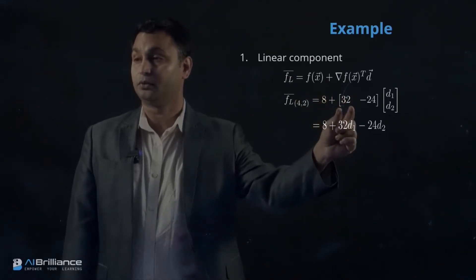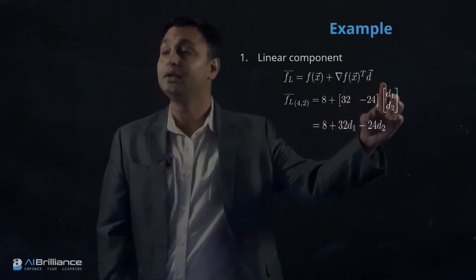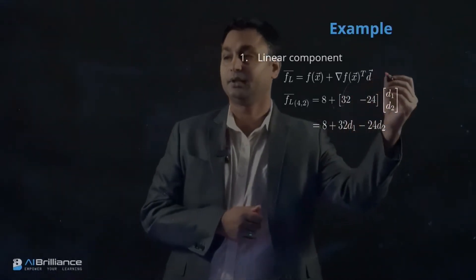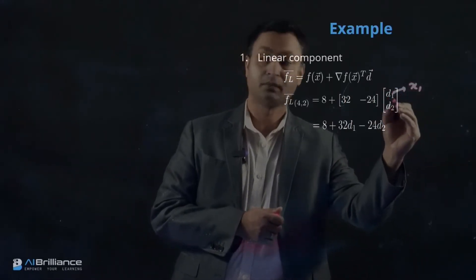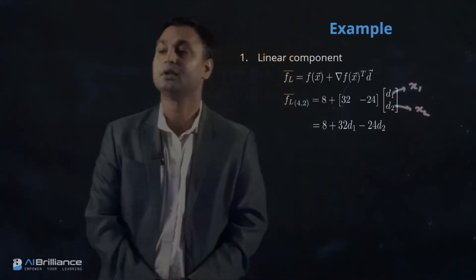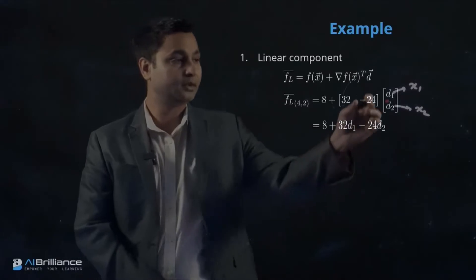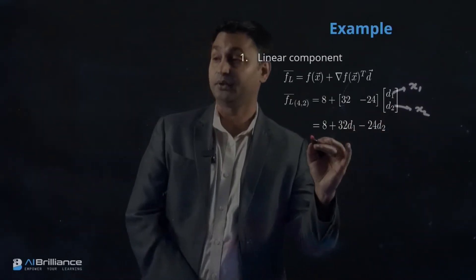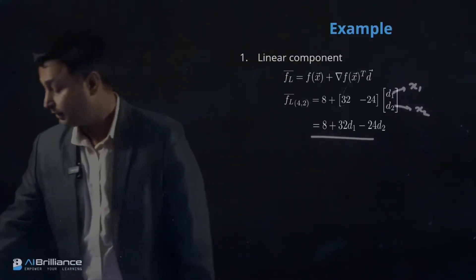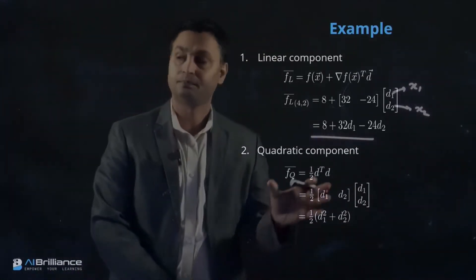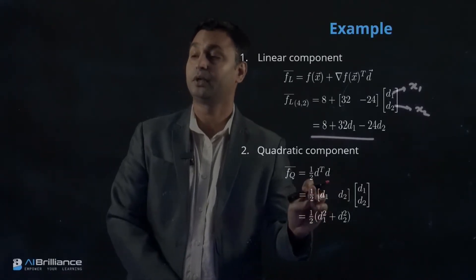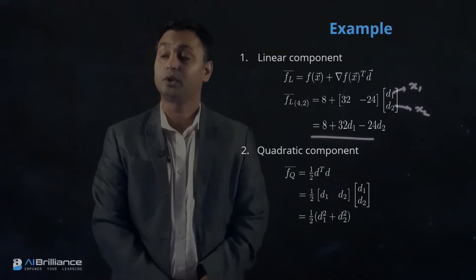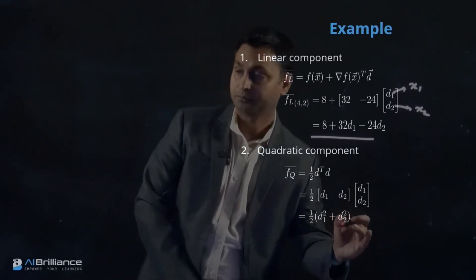The d1 and d2 variables approximate x1 and x2 in the local problem space, distinct from the original x1, x2 space. Multiplying gives the linear component of the overall objective function. The quadratic component is defined as fq = ½ dᵀd = ½(d1² + d2²). We take the linear component and the quadratic component, add them together, and that gives us the local objective function for the current iteration.